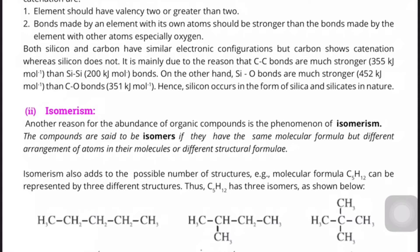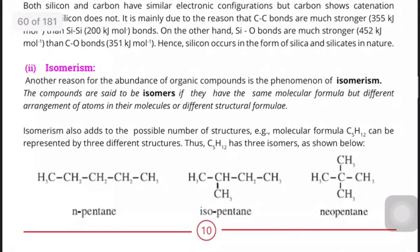This is the definition of isomerism — you have to remember it. Now look at the example of pentane. Pentane is an organic compound which has 5 carbons and 12 hydrogens. Its three forms are: n-pentane (normal pentane), isopentane, and neopentane. If you condense them and write their molecular formula, it will be C5H12.